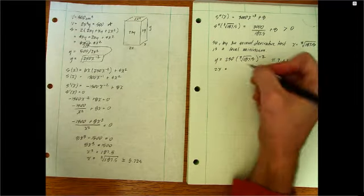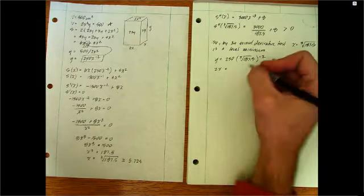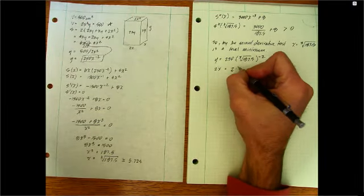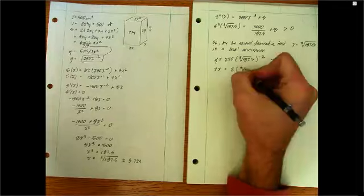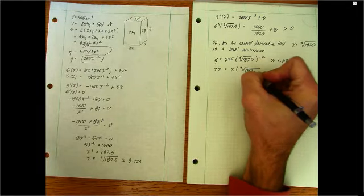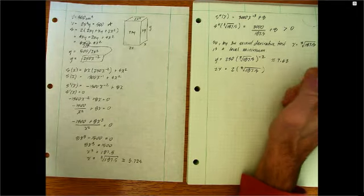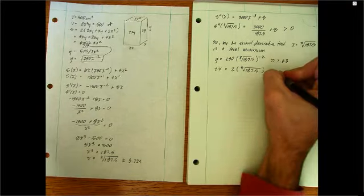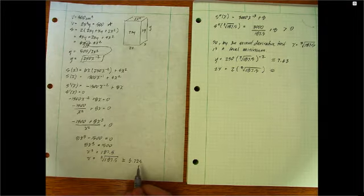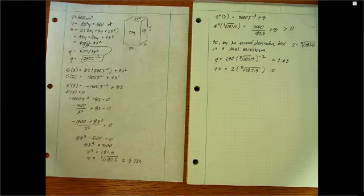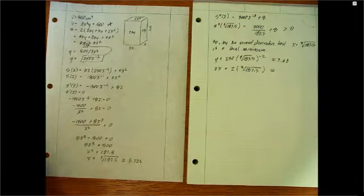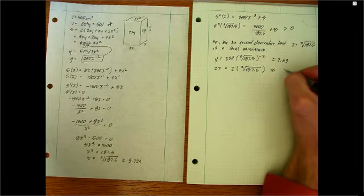2X is going to be just, this dimension here is just going to be 2 times our local minimum value of X, 187.5. So when I do that, well, I should get something about twice the dimensions of 5.724. So when I do that, times 2, 11.448.